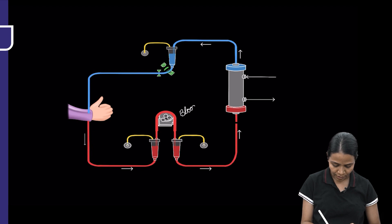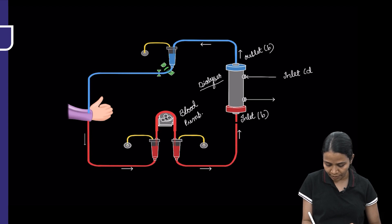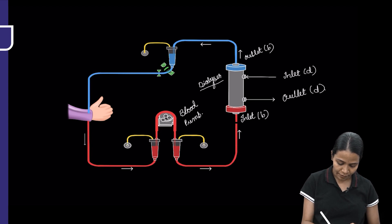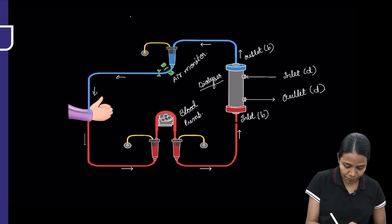It comes into the arterial line and then goes into the blood pump. From there it enters into the dialyser. This is the inlet for the blood and this is the outlet for the blood. This is the inlet for the dialysate and outlet for the dialysate. Then it goes into the venous chamber. Here it will have an air monitor, because if air is there, the blood cannot be returned back into the body. Then the blood goes back into the body. This is the blood circuit.